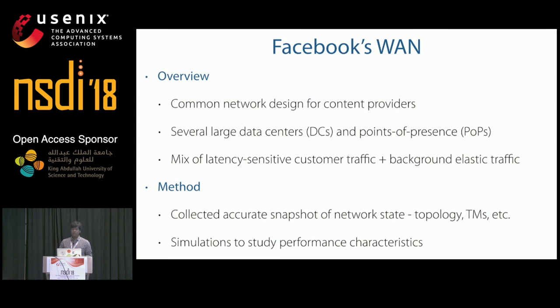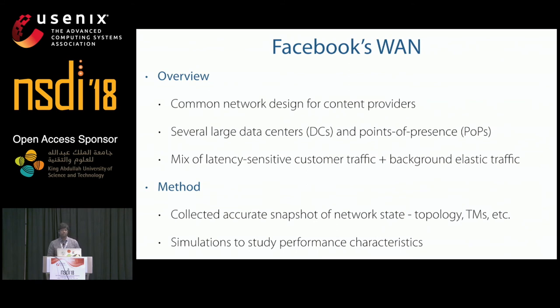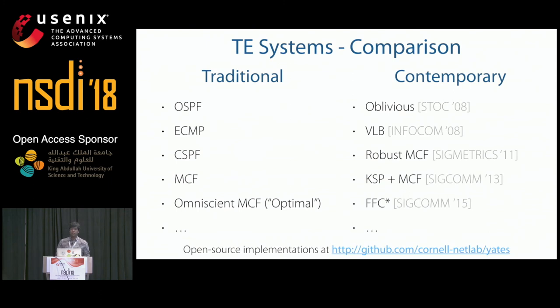To analyze SMORE's performance and robustness, we performed extensive evaluation using data from Facebook's wide area network. The network follows a common content-provider design with several large data centers and points of presence across the globe, carrying both latency-sensitive customer traffic and background elastic traffic. We collected accurate snapshots of topology and traffic matrices for over a month and performed high-fidelity simulations. We implemented a wide range of TE systems from traditional to recently proposed schemes, plus an optimal MCF-based benchmark using infinite paths and no operational constraints.